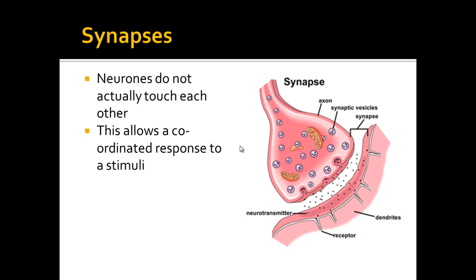Neuron cells don't actually touch one another, so the pre- and the post-synaptic cells don't touch because they've got this gap here which is the synapse.